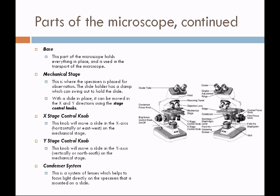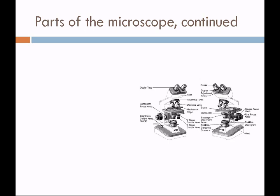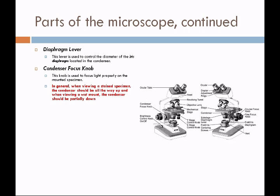Below the stage is the condenser system, which looks sort of like a camera lens. It's a system of lenses which helps focus light directly on the specimen mounted on the slide. The condenser can be moved up and down with the condenser focus knob. The diaphragm lever is found on the condenser and is used to control the diameter of the iris diaphragm. There is a general rule of thumb: when viewing a stained specimen, the condenser should be all the way up, and when viewing a wet mount, the condenser should be partially down.